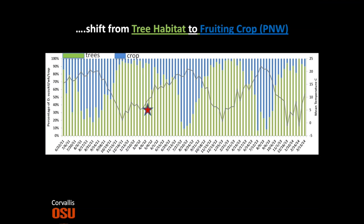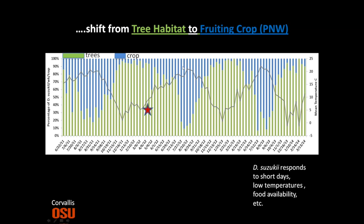Let me give you an example of what we saw over four years. You can see temperature on the right side. As it starts going down, the majority of those flies hang in the protective tree habitat — shown in green. These are trap counts, actually thousands of trap counts. As temperature starts going up, you can see how they shift back — they move over to the crop as it ripens. And then as temperature goes down, the shift goes back into the trees.